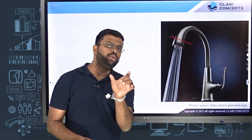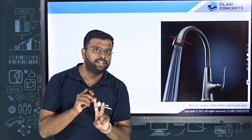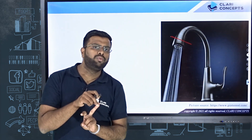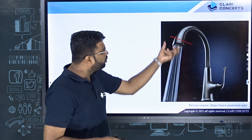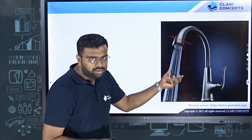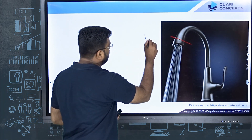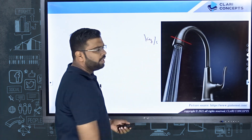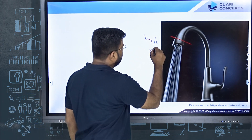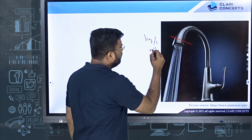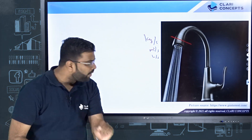When I say 'amount,' it can be measured in two ways: in mass (kg) or in volume (liters or cubic meters). If you measure the mass of water coming out every second, that is the mass flow rate, measured in kg per second. If you measure in volume, that is the volume flow rate, measured in cubic meters per second or liters per second.